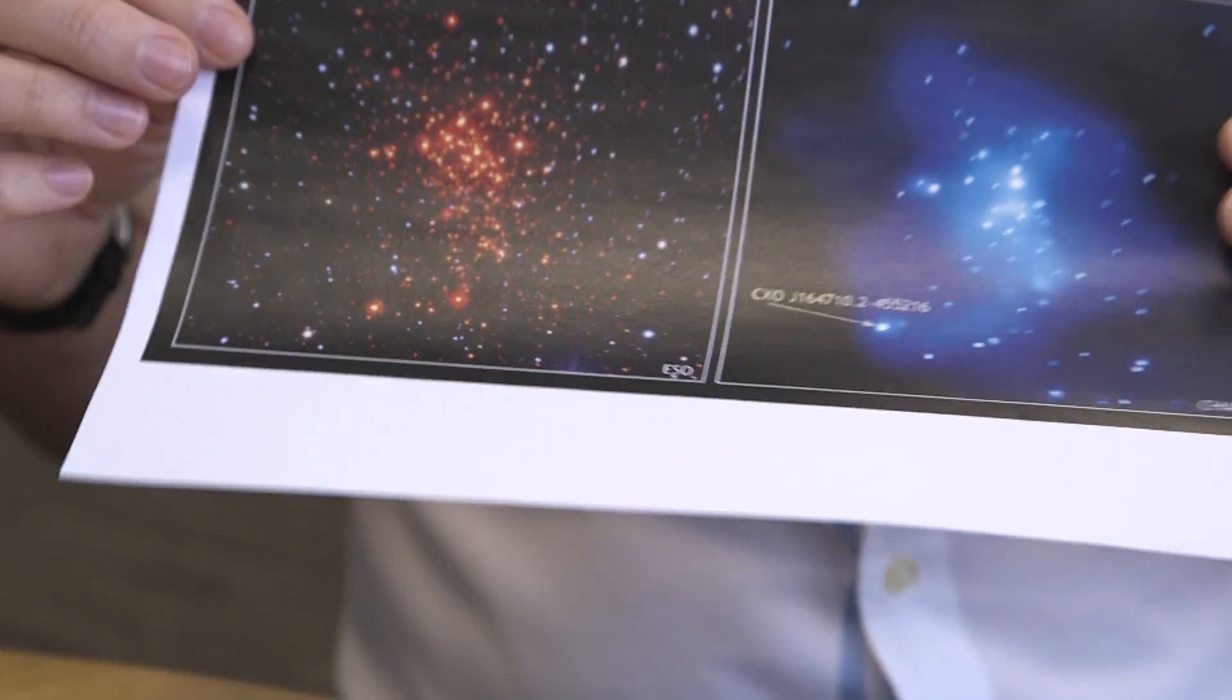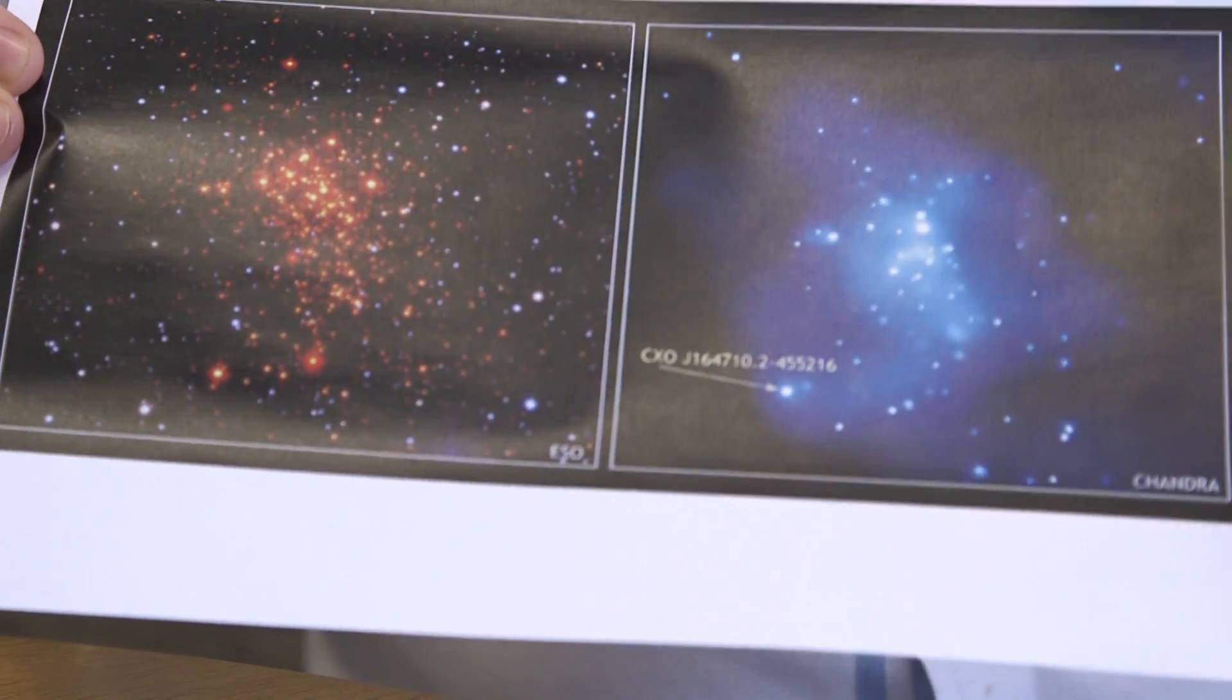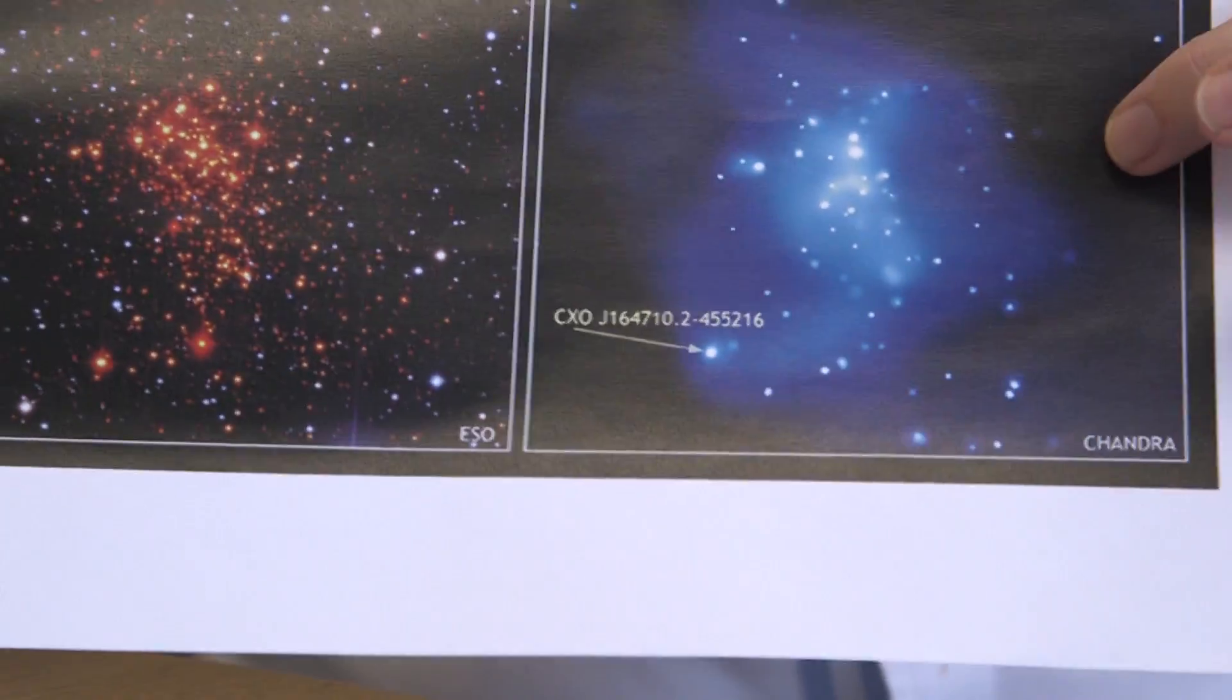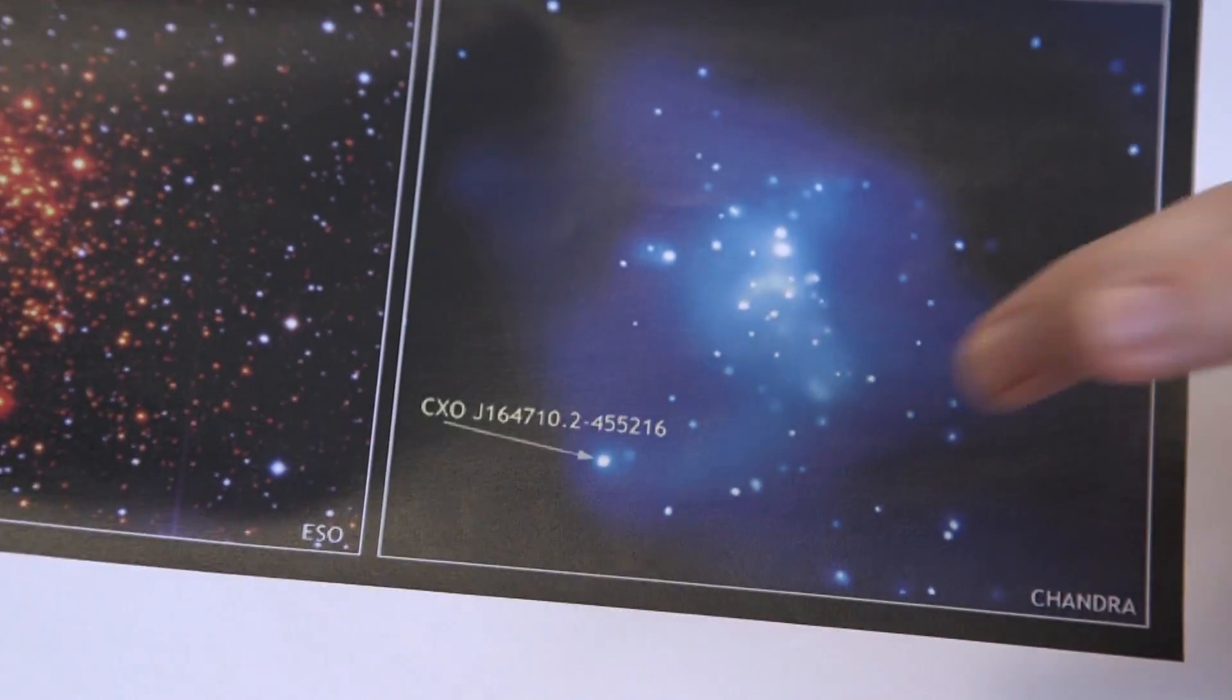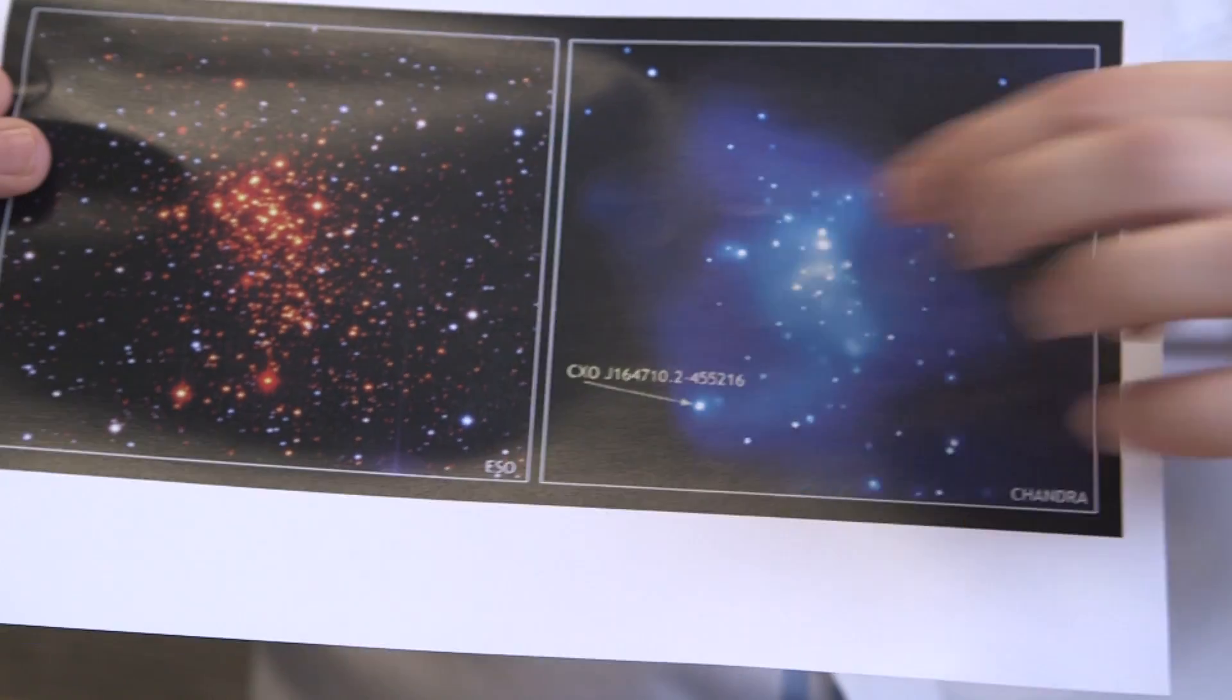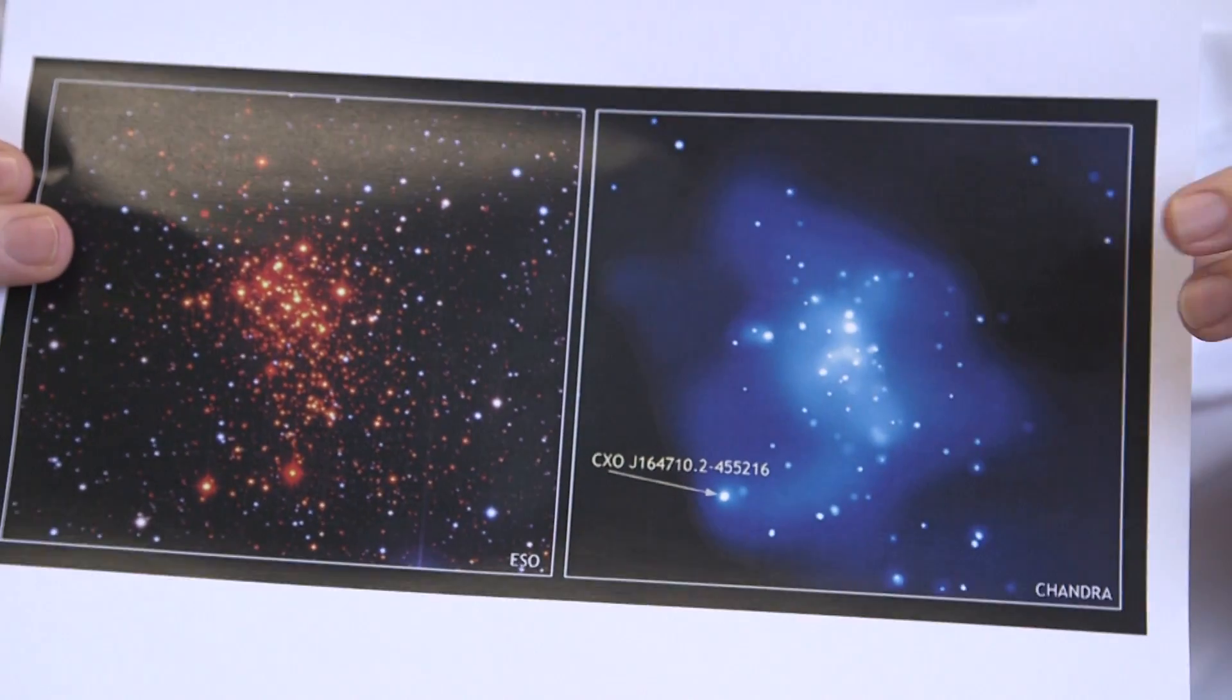And so here we have the optical view of our star cluster taken with ESO telescopes in Chile. And then on the right is now an X-ray view. And there's lots of X-ray sources in there, but one of them has no optical counterpart. This thing with the arrow pointing to it, this long telephone number. And that's the neutron star.